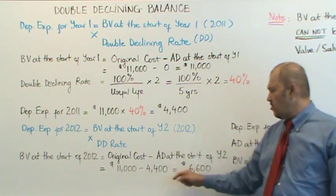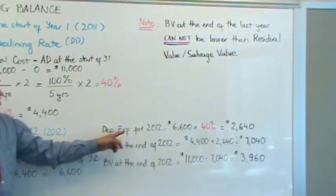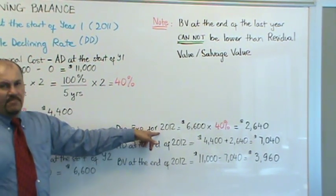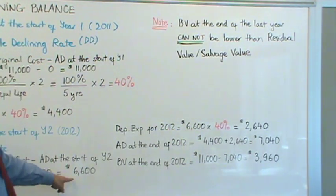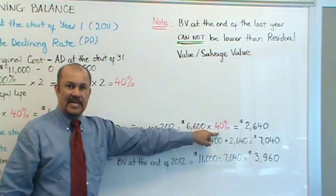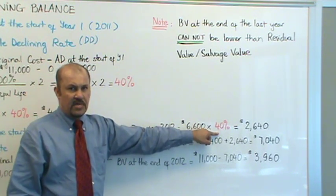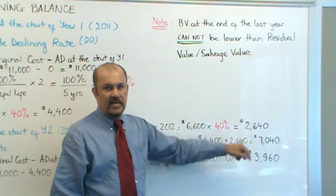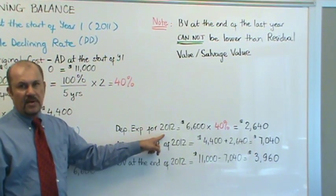So the depreciation expense for year one also becomes your accumulated depreciation at the end of year one. That gives us $11,000 minus $4,400, equal to $6,600. The depreciation expense for 2012 would be $6,600, which represents your book value at the start of year two, times your double declining rate. Your double declining rate stays the same — 40% throughout the years — giving us a depreciation expense of $2,640 for year two, or 2012.